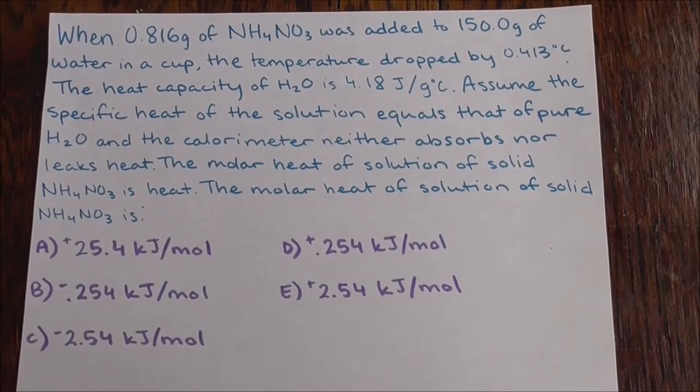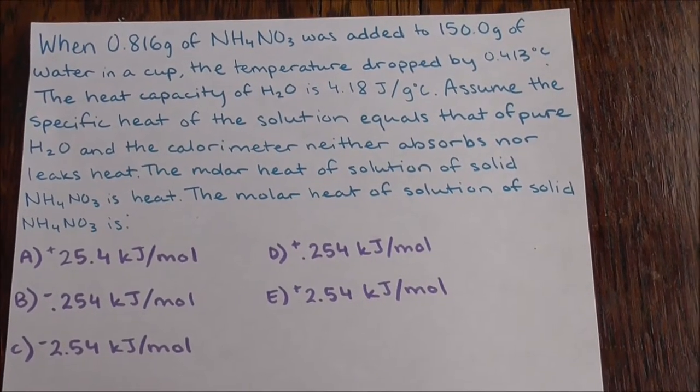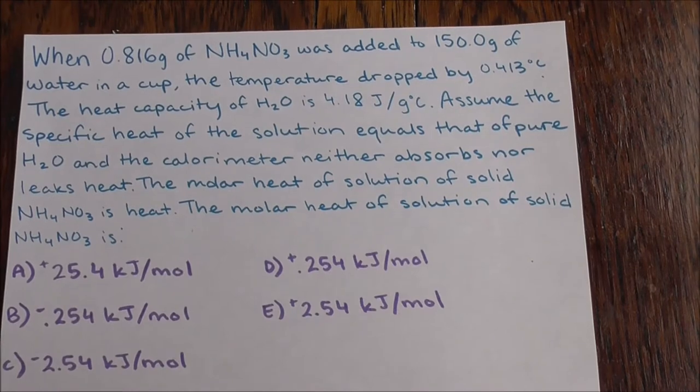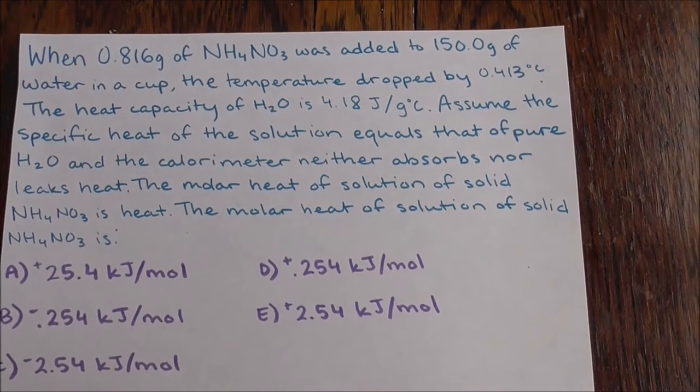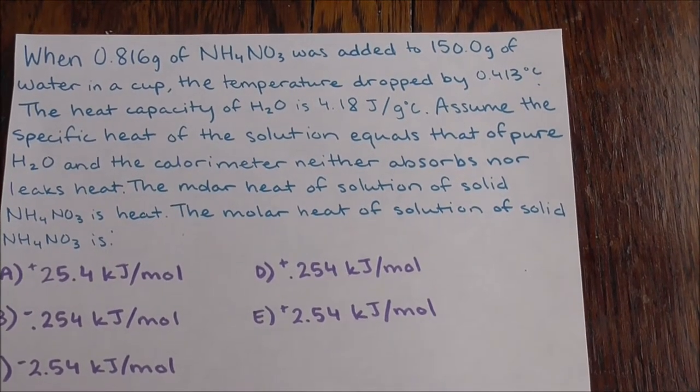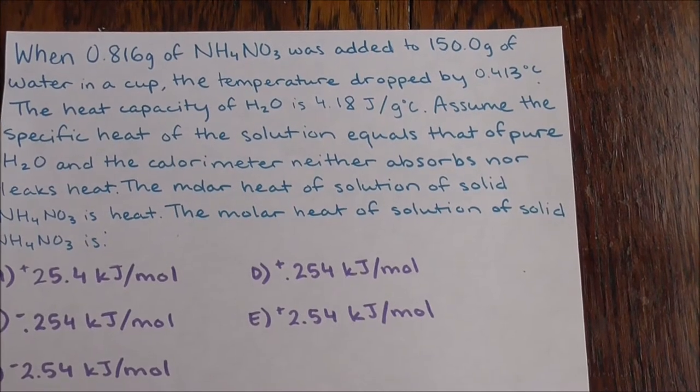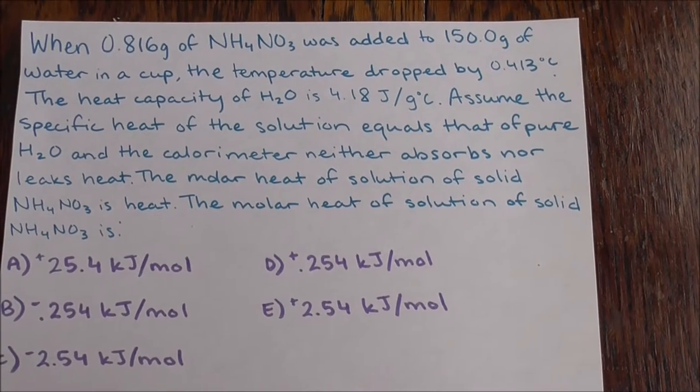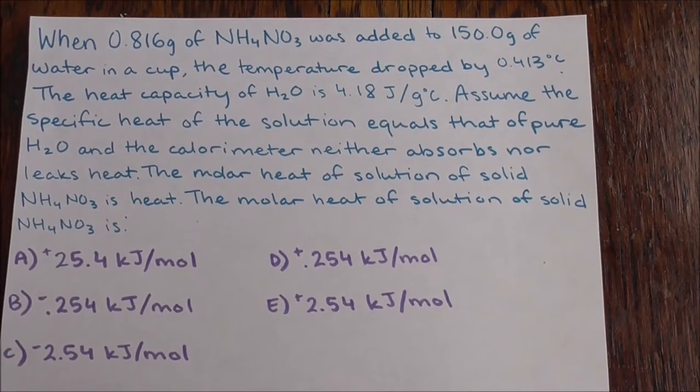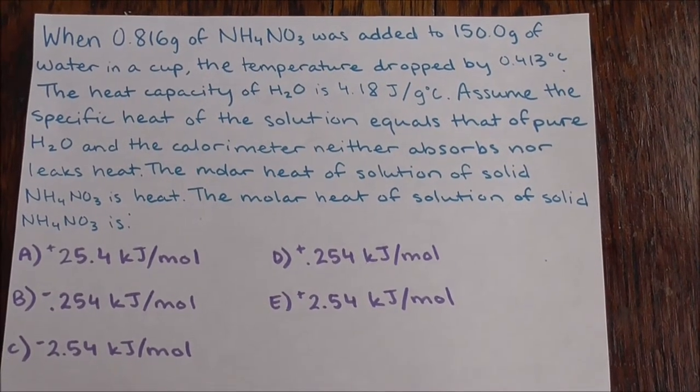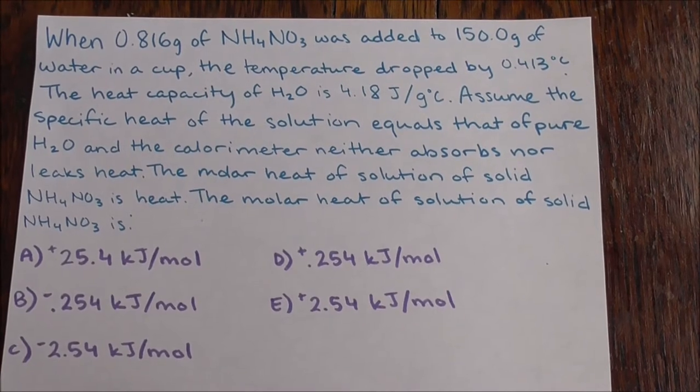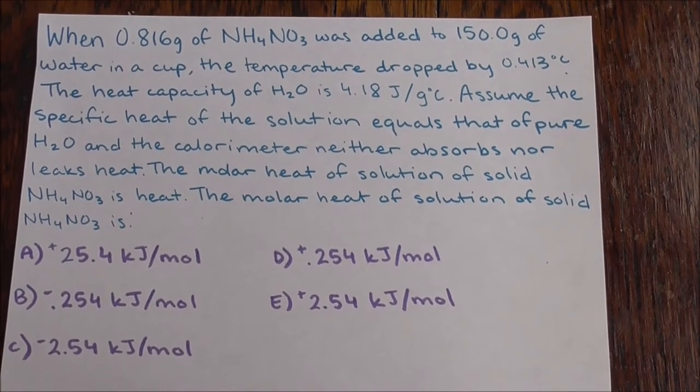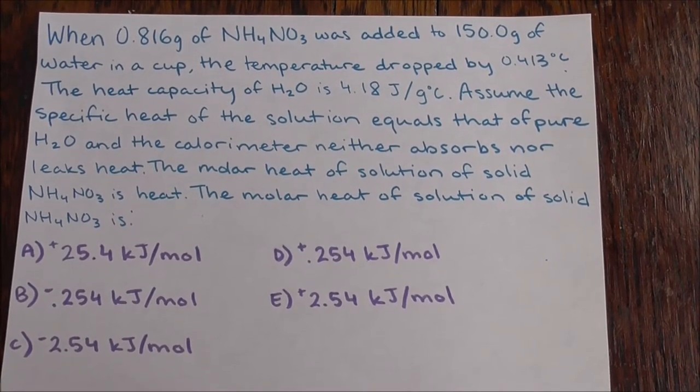When 0.816 grams of NH4NO3 was added to 150 grams of water in a cup, the temperature dropped by 0.413 degrees Celsius. The heat capacity of H2O is 4.18 joules per gram degree Celsius. Assume the specific heat of the solution equals that of pure H2O and the calorimeter neither absorbs nor leaks heat. The molar heat of the solution of solid NH4NO3 is: